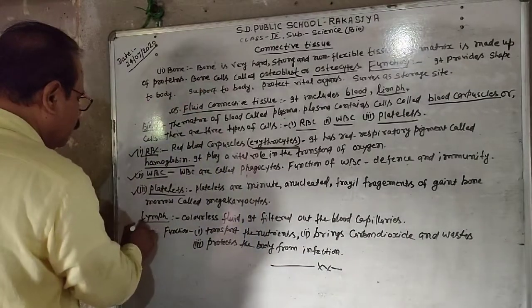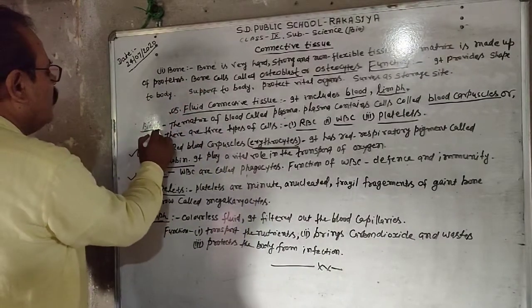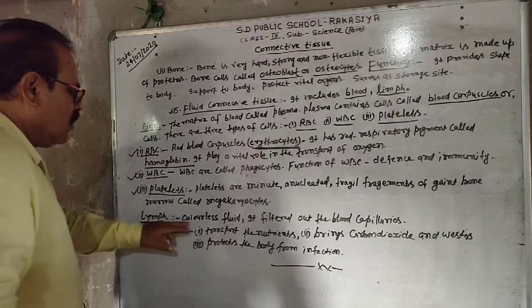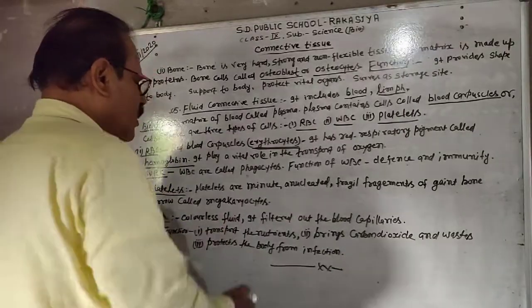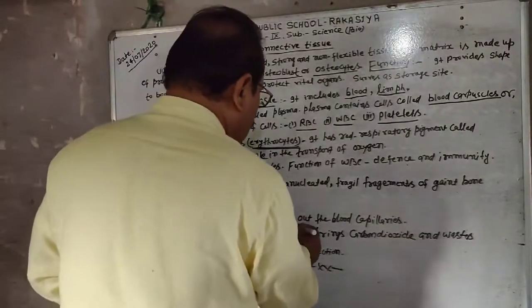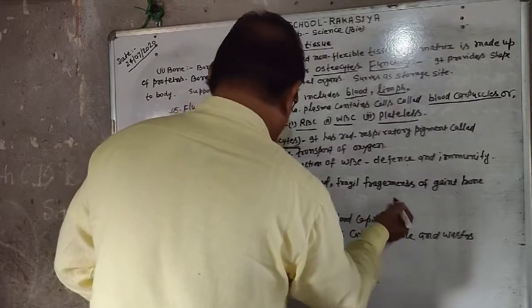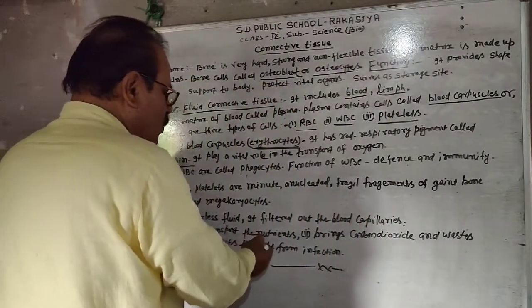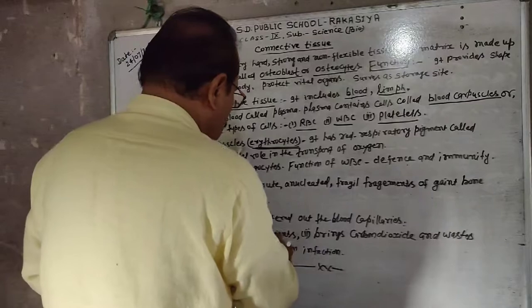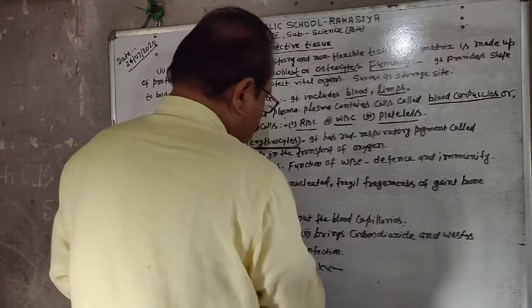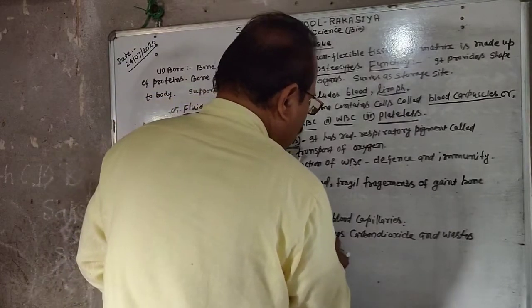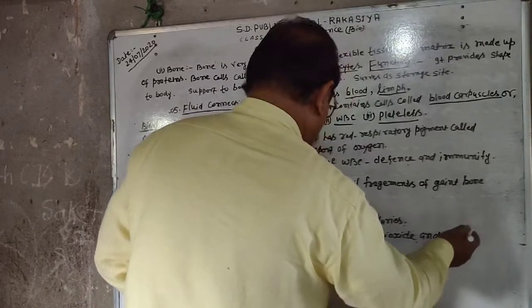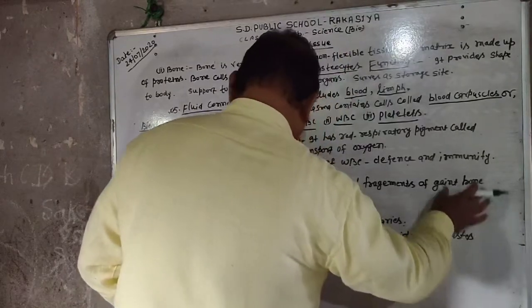Lymph is a colorless fluid. It filters out from blood capillaries, transports nutrients, and brings carbon dioxide and waste away from tissues.